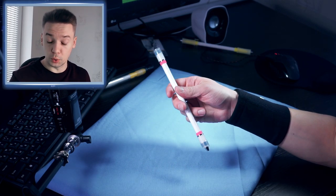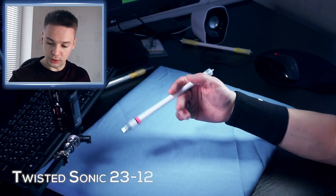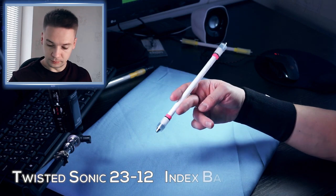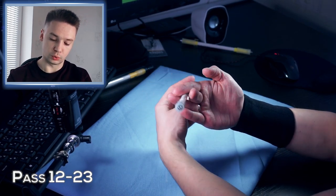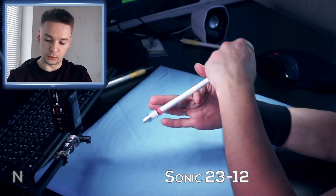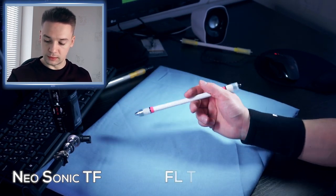This mini combo consists of the following tricks. First we do Twisted Sonic, then Index Back 212, Pass 1223, Sonic 2312, Neosonic T1, Fingerless Thumbaround.